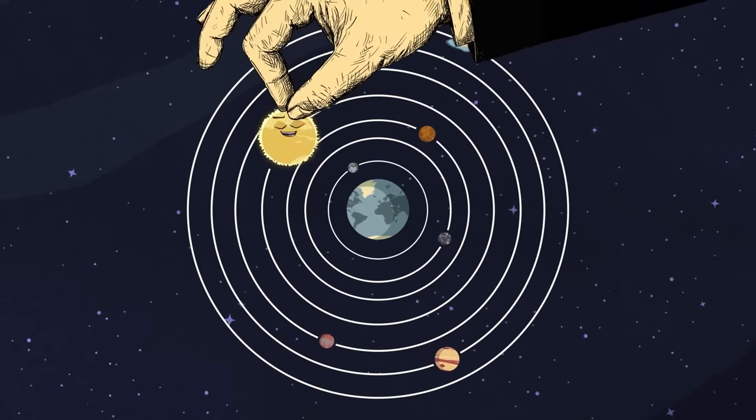Divergent boundaries move away from each other and produce rift valleys, most active between oceanic plates. Convergent boundaries move toward one another and destructively collide — that's where most earthquakes and volcanoes reside. Transform boundaries are two plates that slide past one another; the San Andreas Fault is the best example. Let's look at the seven major tectonic plates.